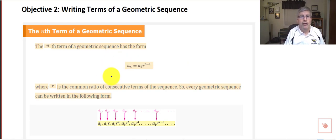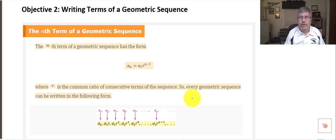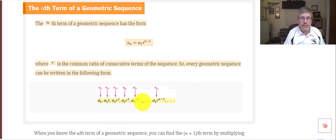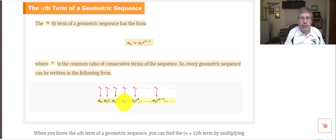The nth term of a geometric sequence takes on this form: a sub n equals a sub 1 times r raised to the n minus 1, where r is our common ratio of consecutive terms. We can write every geometric sequence as: a sub 1 for the first term, a sub 1 times r for the second term, a sub 1 times r squared for the third term, and a sub 1 times r to the third power for the fourth term. The exponent on r is the term number minus 1.